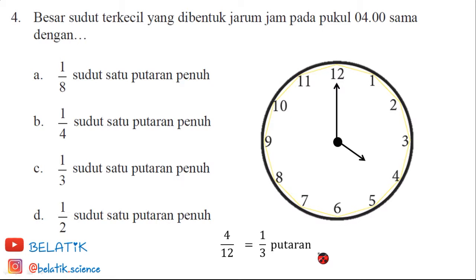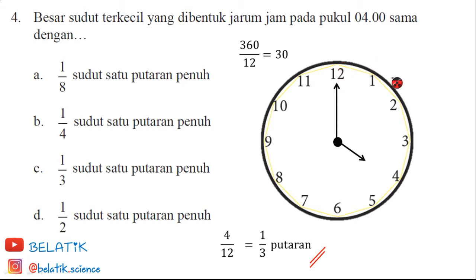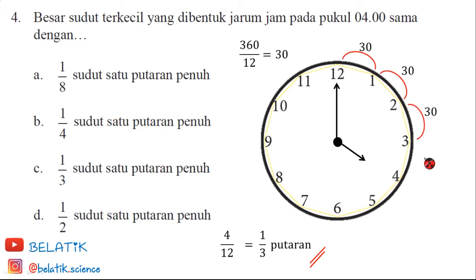Untuk cara kedua, kita menggunakan sudutnya. Karena lingkaran sudutnya 360 derajat, maka 360 dibagi 12 sama dengan 30. Artinya dari angka 12 ke angka 1 adalah 30 derajat. Kemudian 1 ke 2 adalah 30 derajat, 2 ke 3 adalah 30 derajat, dan 3 ke 4 juga 30 derajat.